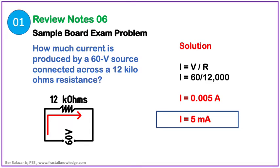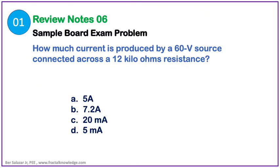Solution: I is equal to V over R, that is 60 divided by 12kΩ, which equals 0.005A. Using our metric prefix and moving the decimal to the right by 3 spaces, we have 5mA. The answer is letter D, 5mA.